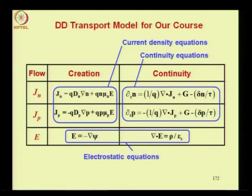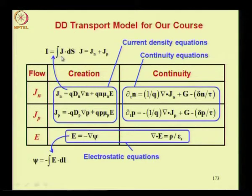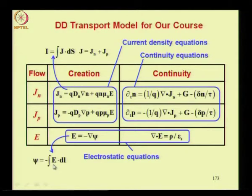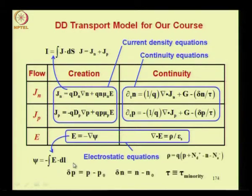In the last four lectures we have learned a number of things about the drift diffusion model, so let us summarize. The drift diffusion model consists of six equations: two current density equations, two continuity equations, and two electrostatic equations. You can integrate the current density obtained by summing up the electron and hole current densities at any contact, where dS is the contact area, and get the voltage across the device by integrating the electric field from one end of the contact to the other. The space charge in this equation is given by q times the hole concentration plus the ionized donor concentration minus electron concentration minus the ionized acceptor concentration.